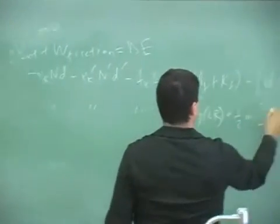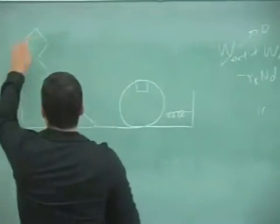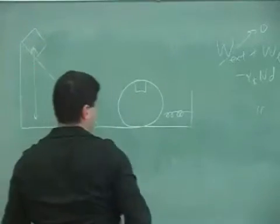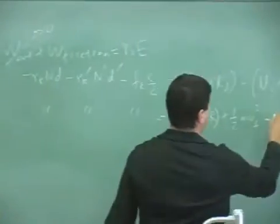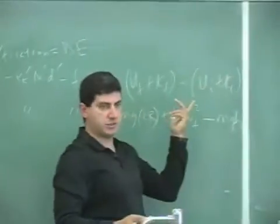U_initial will be what? The potential energy that the object had up here, which is mgh. And then the kinetic energy is zero.